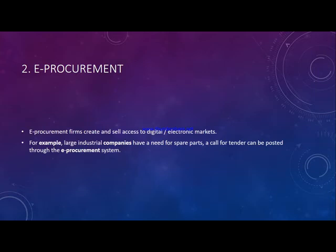For example, large industrial companies have a need for spare parts or other things. They call for a tender which can be posted through an e-procurement system. E-procurement can be a separate firm, but even existing firms create their own e-procurement systems. If a larger firm needs certain supplies in a large amount, they create an e-procurement system — a digital electronic market — then invite and sell access to other firms to participate in that tender. Whoever wins the tender makes business with them.